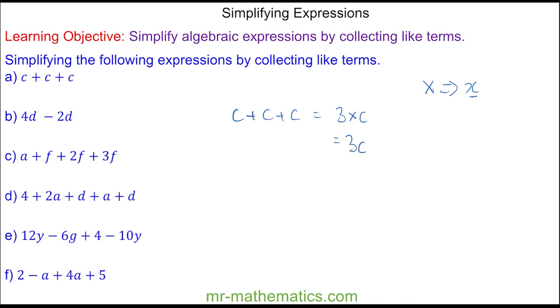For question b, we have 4d, which is four lots of d, and we can take two d's away. This one will go and this one will go, so we're left with two d's.